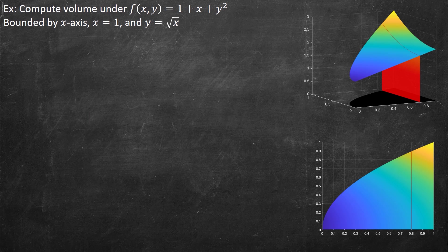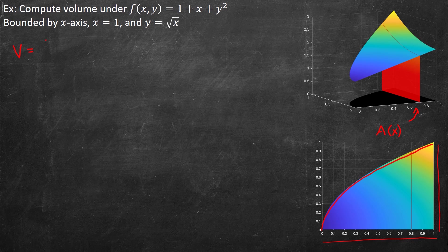Let's see this example more explicitly. The function is 1 plus x plus y squared, bounded by the x-axis, the line x equal to 1, and the curve y equal to square root of x. The approach is to use vertical strips, computing the area at any value of x, integrating from 0 to 1 of A(x) dx.